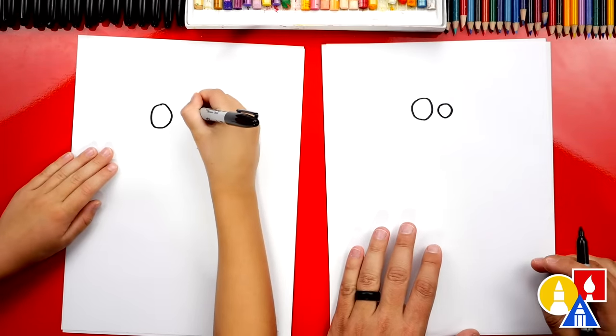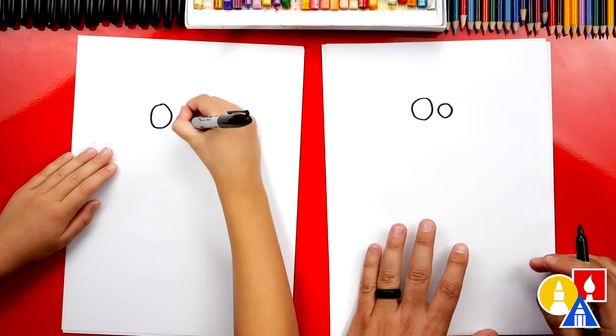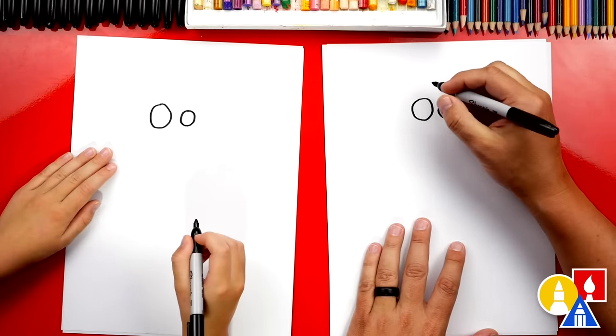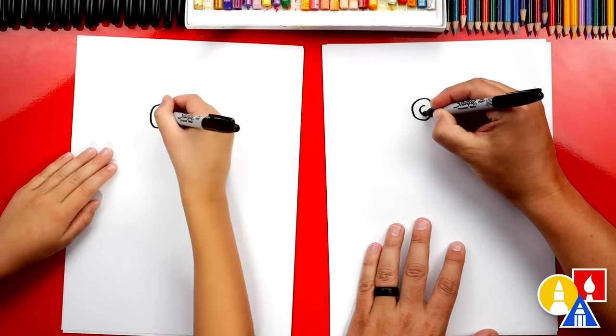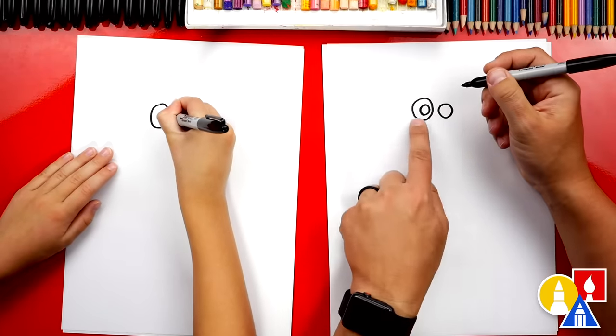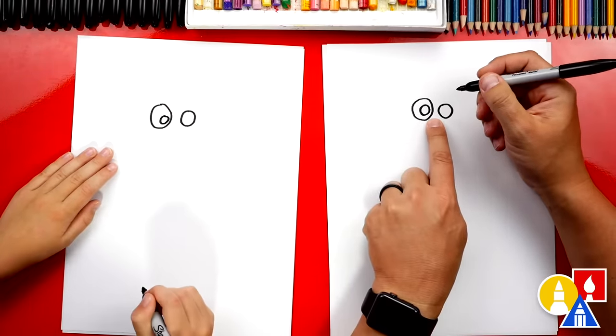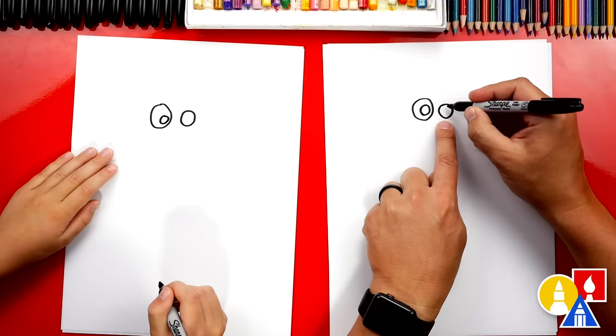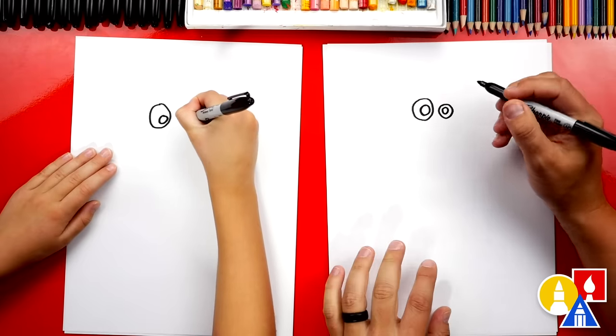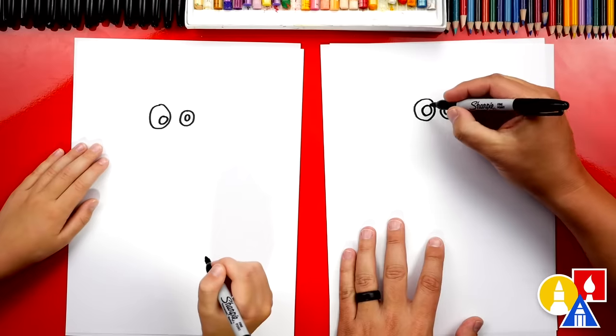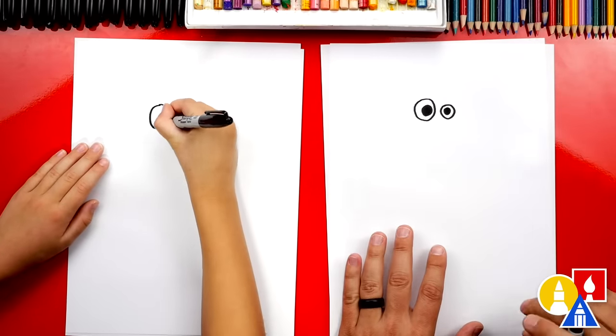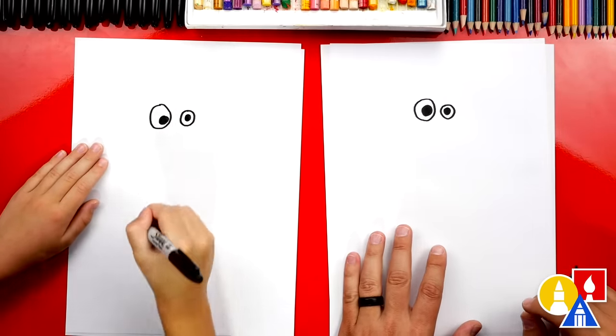These are his googly eyes. One's bigger and the other smaller. I like how crazy his eyes are. Now we're going to draw the center or the pupil. See how it's close to the inside of the bigger circle? On this one, we're going to draw a smaller pupil, more in the center. Now let's color in his pupils solid black.